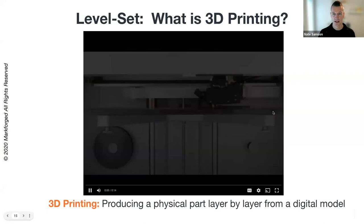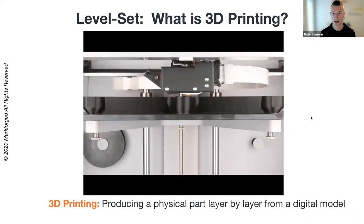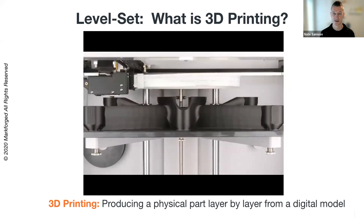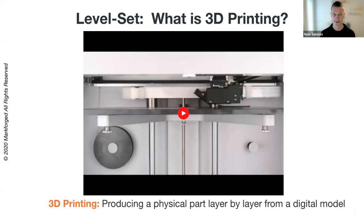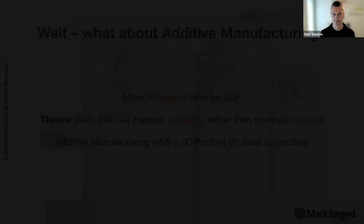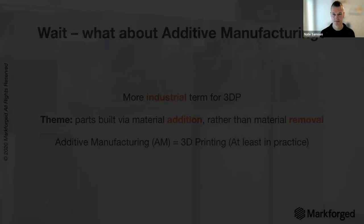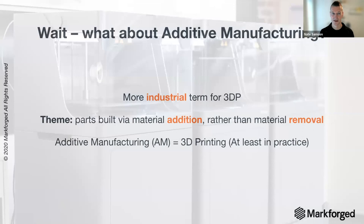3D printing is extruding material and creating a part layer by layer. Our specific technology extrudes a thermoplastic through a hot nozzle onto a build plate, layer on top of layer, to produce your geometry. That was a time lapse of a drone body being printed on our industrial composite machine. Additive manufacturing and 3D printing are essentially the same thing — additive manufacturing is the more industry-specific term, but they both produce a part layer by layer.